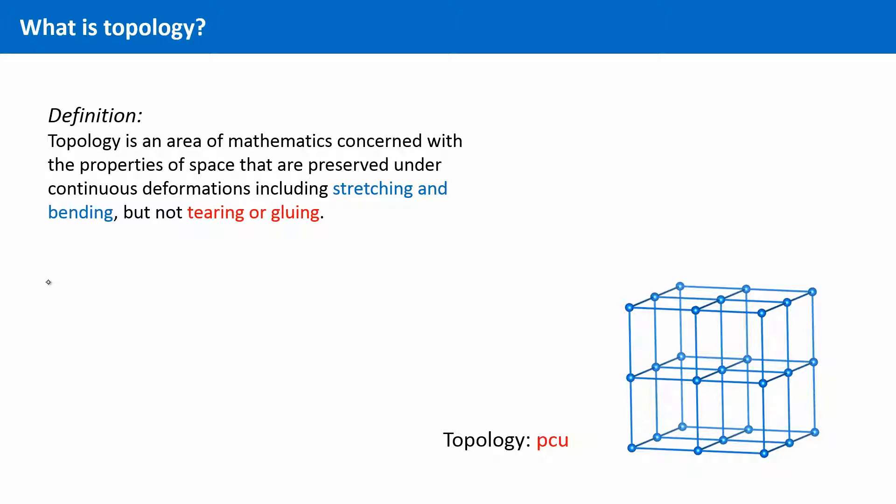Nets are commonly denoted with a three-letter code and the abbreviated name for the underlying net of MOF-5 is PCU. Sometimes the name of a net gives an indication from what this net is derived, as in this case. But in most cases the names of the nets are arbitrarily chosen.